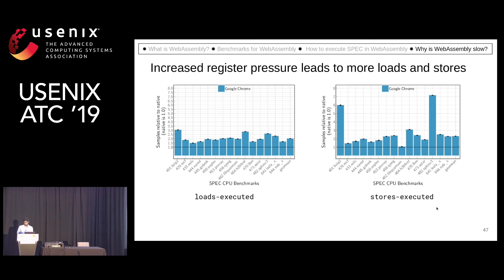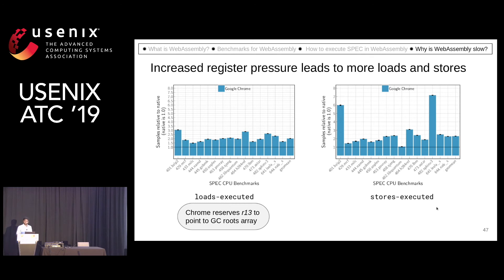So why is that? These JIT compilers need to know where the GC roots point to so that they can start garbage collection. The only way they can know is by reserving a specific register.